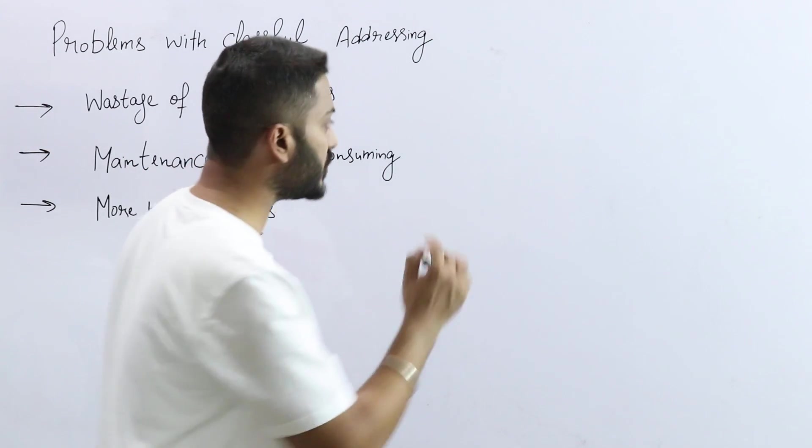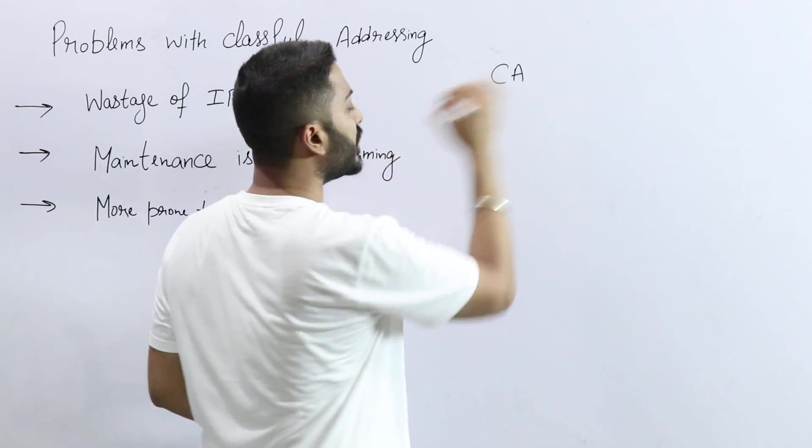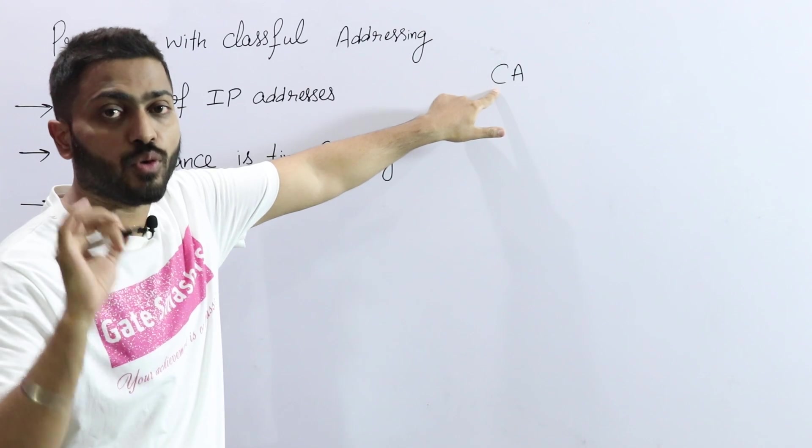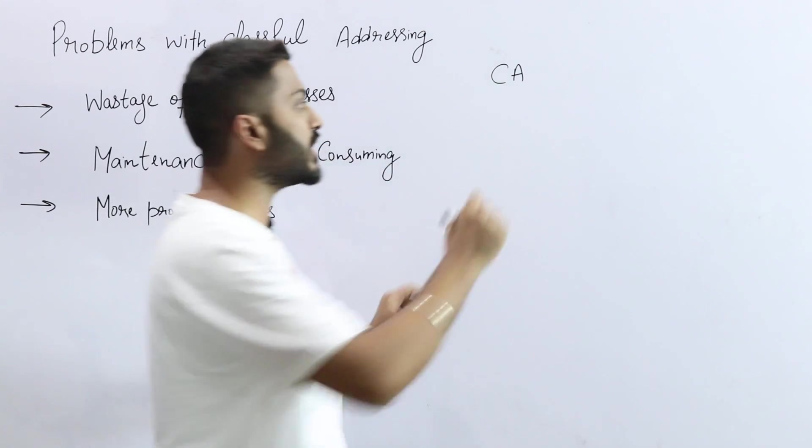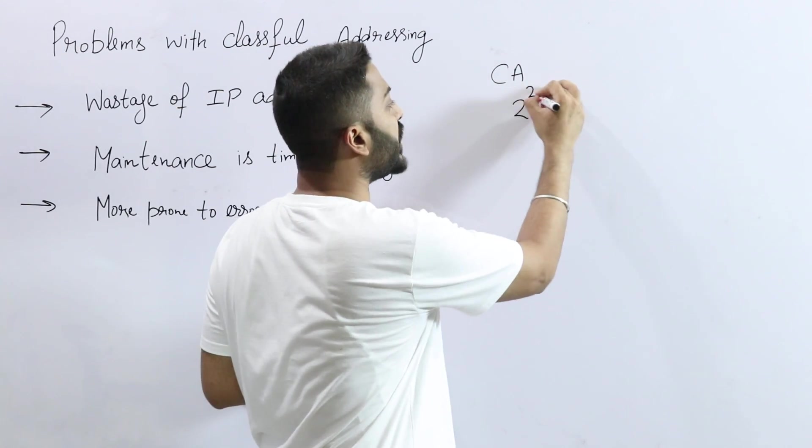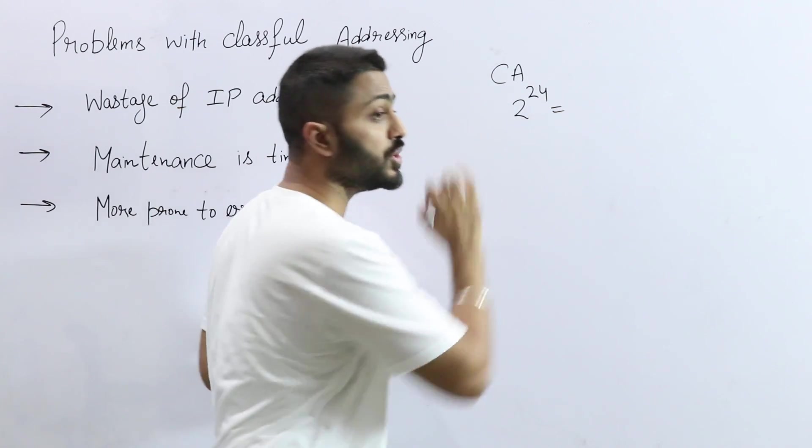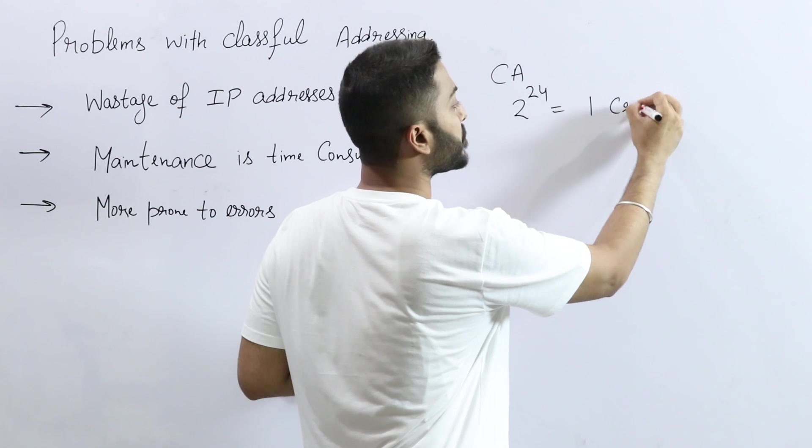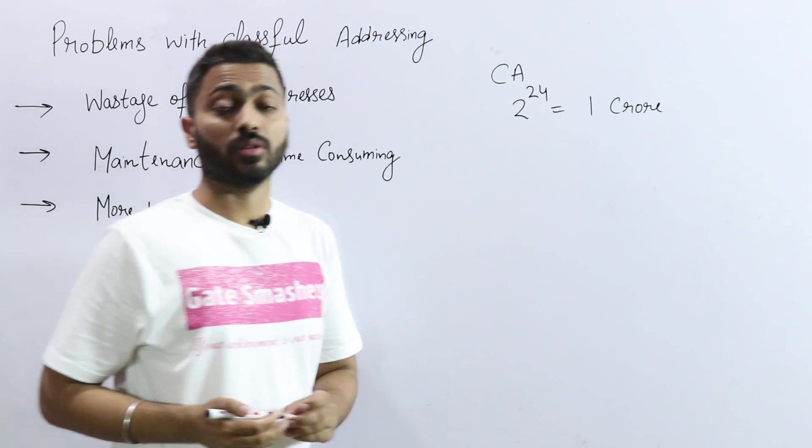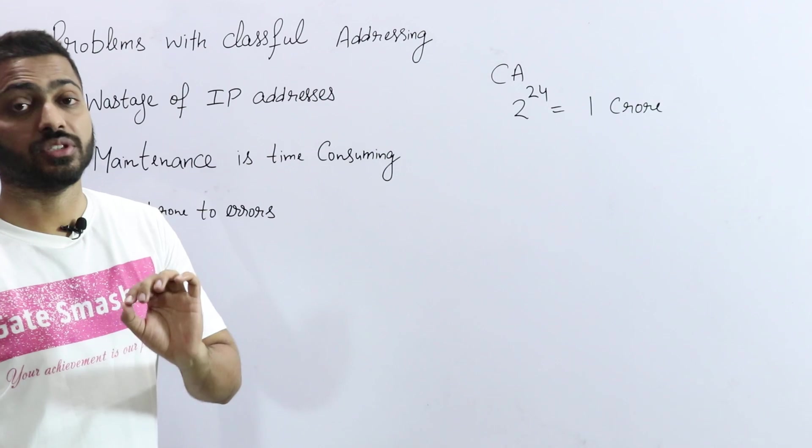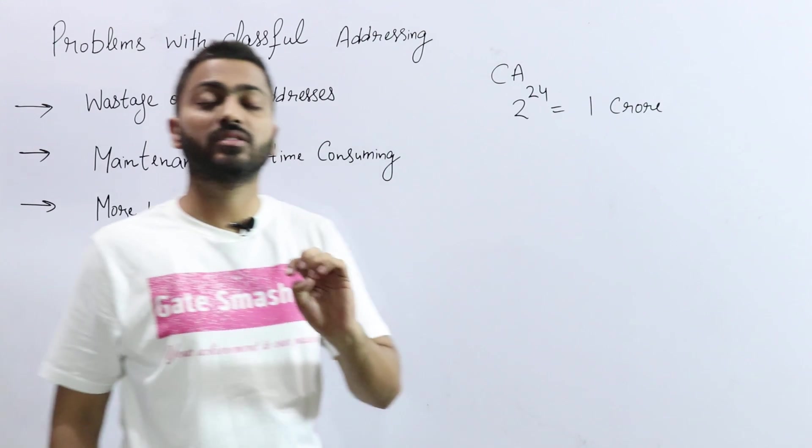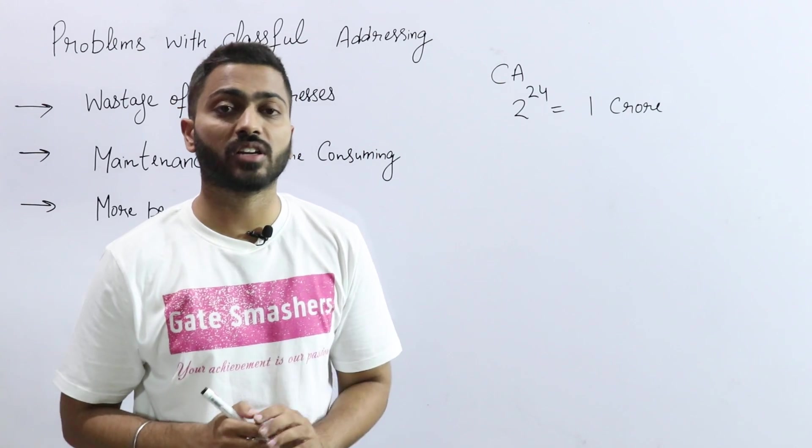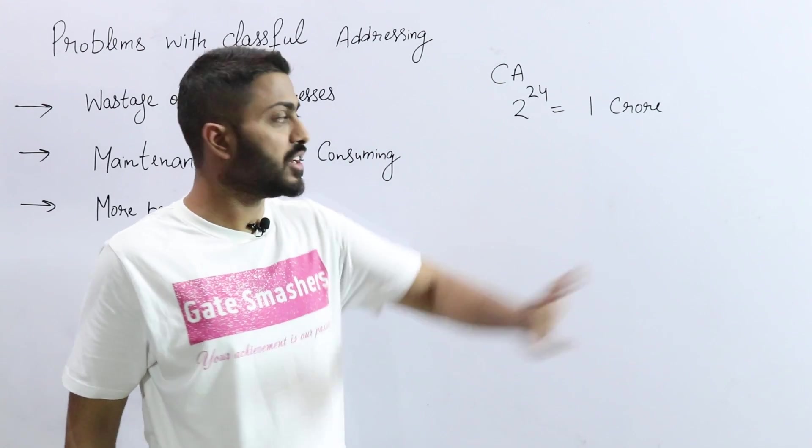Why is there wastage of IP addresses? In class A, we have already discussed that the number of hosts in each network is 2 raised to power 24, which is a very huge number, more than 1 crore. The number is very huge. Now, if you have a big MNC, a big multinational company, there is no such number of hosts needed.